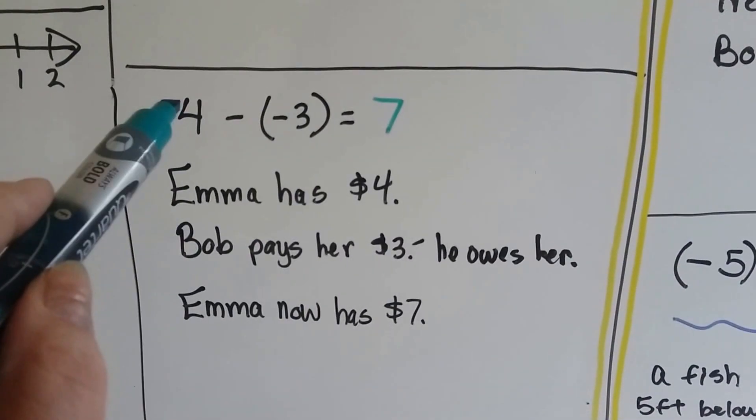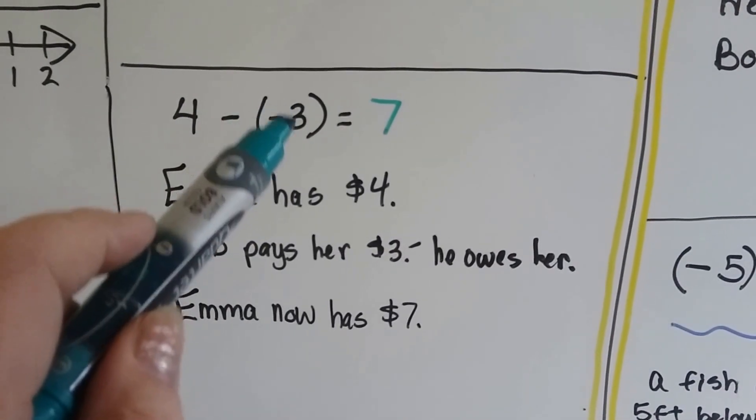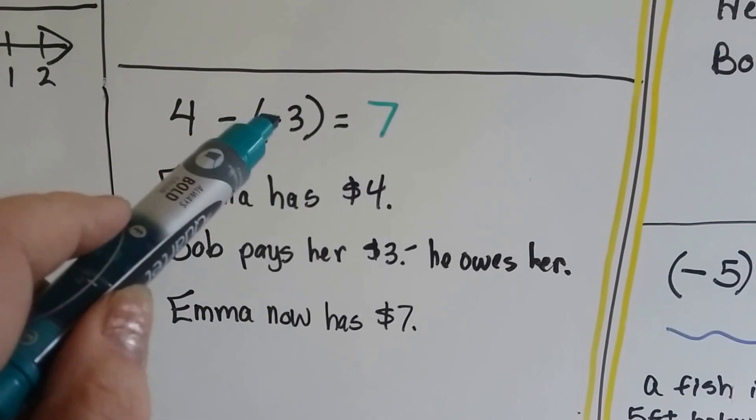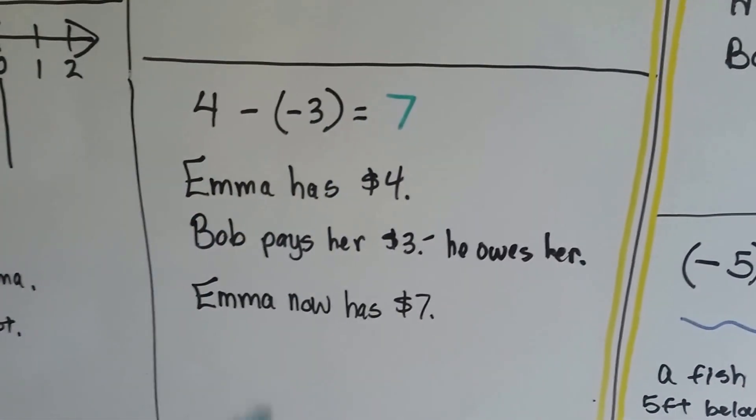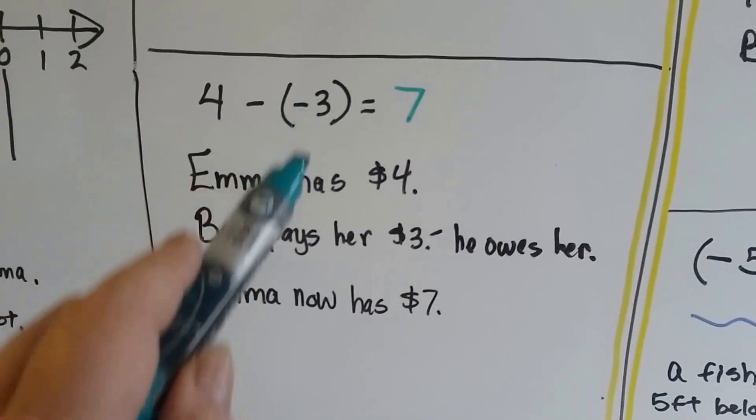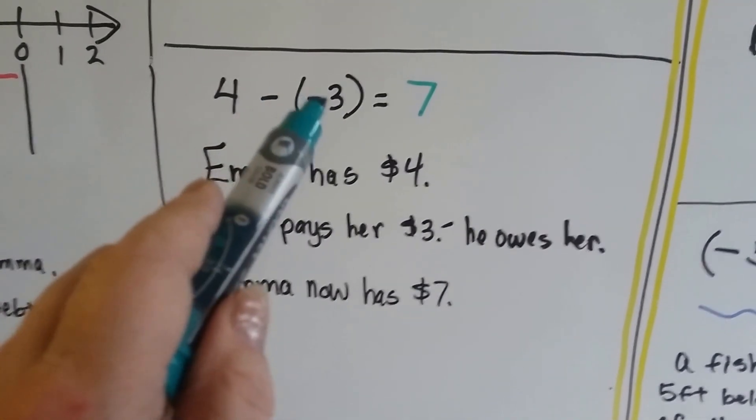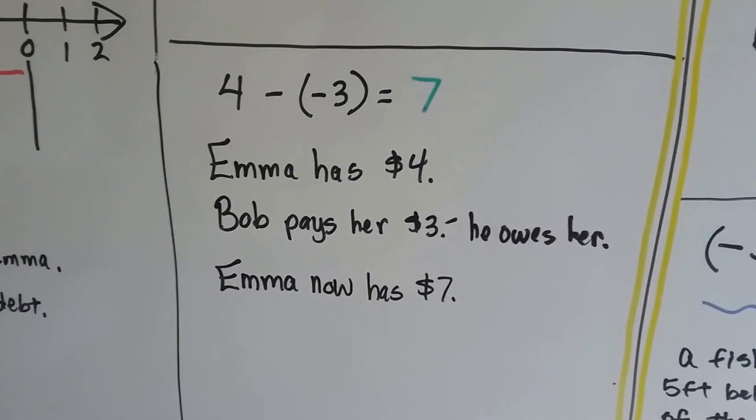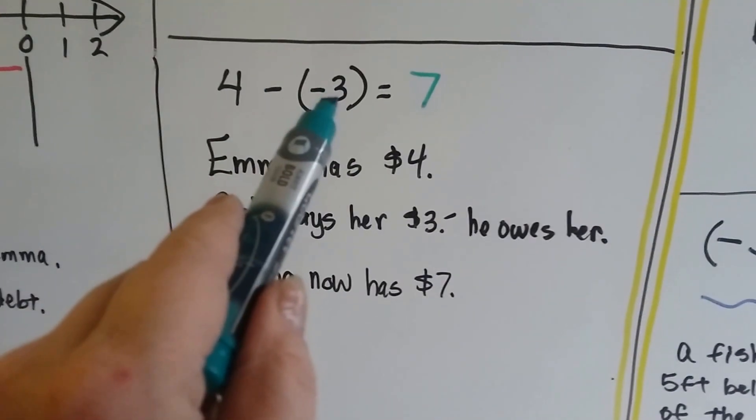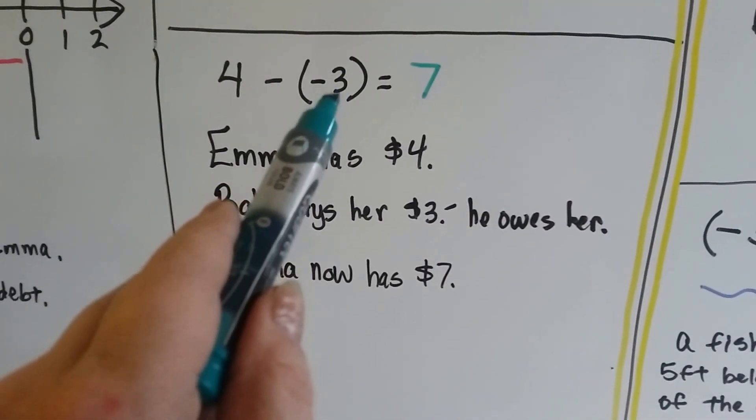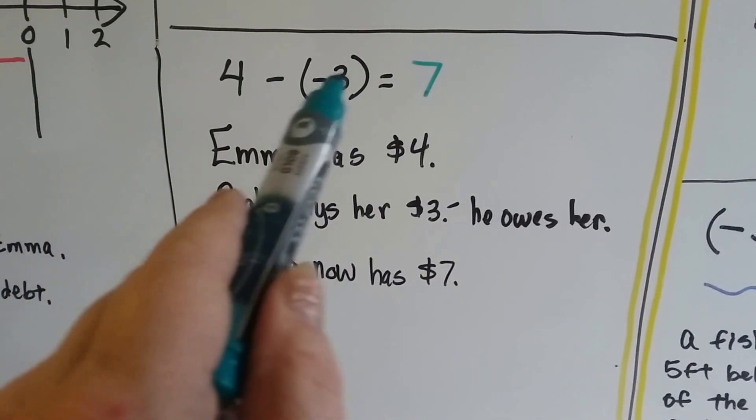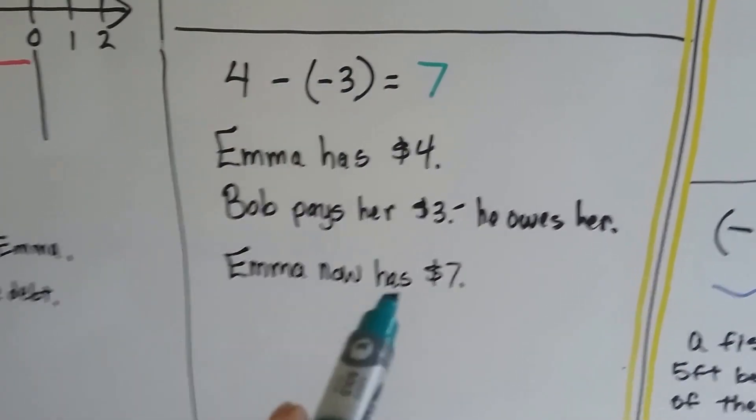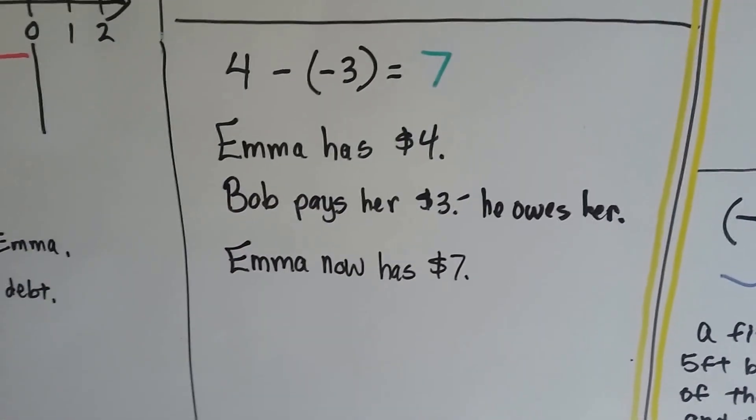Emma has $4. Bob pays her $3 that he owes her. Now Emma has $7. He's taking away $3 of the debt he owes her. When you take away $3 of the debt, that means you're paying somebody. You're taking away the debt. That means you're adding money. So, by taking away $3 of his debt, Emma now has $7.